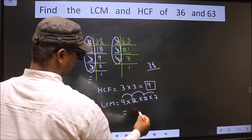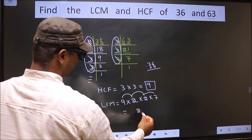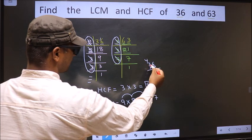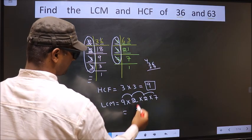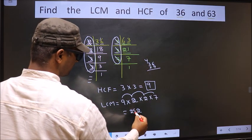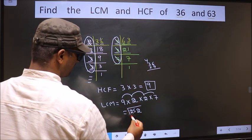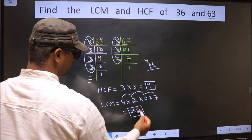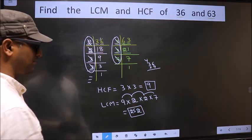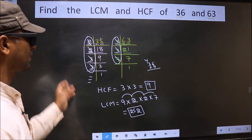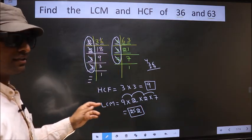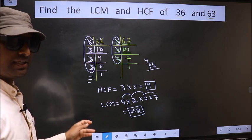7 into 6 is 42, carry 2. 7 threes are 21 plus 4 is 25. So we got 252 as our LCM. Am I clear?